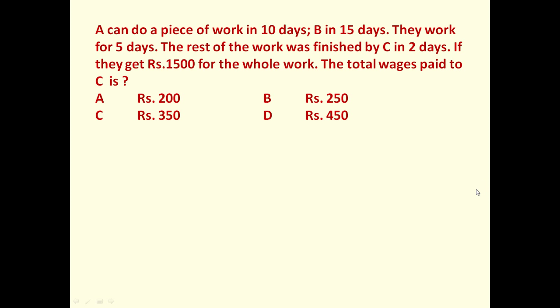First let us determine total work done by A plus B in one day. One day work by A is 1 upon 10, one day work of B is 1 upon 15. So one day work done by A plus B is 1 upon 10 plus 1 upon 15, equals 1 by 6.